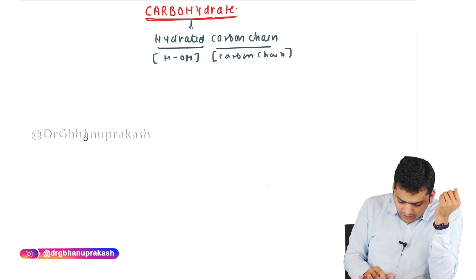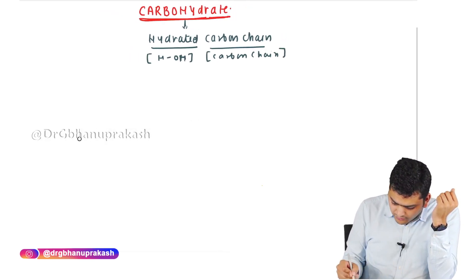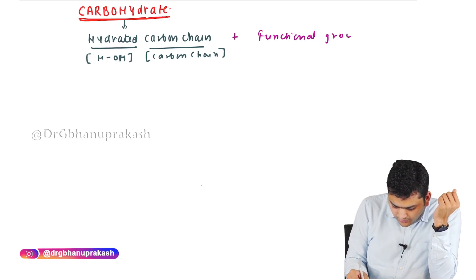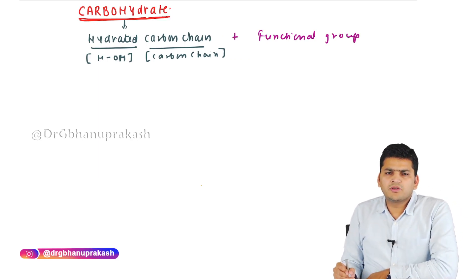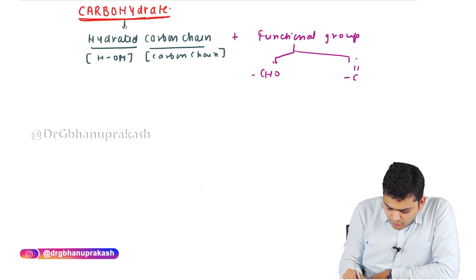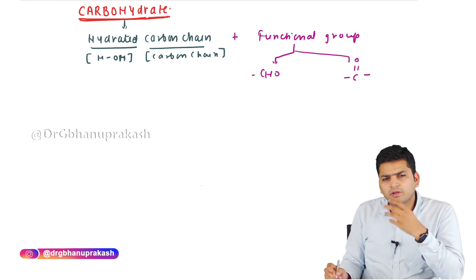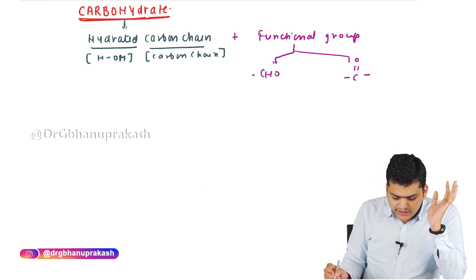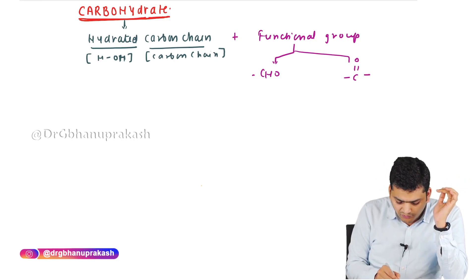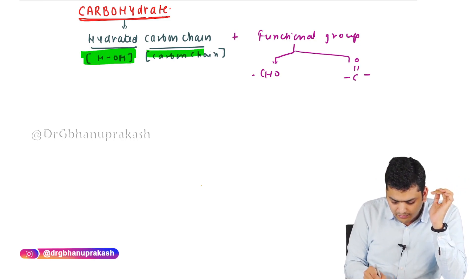To make a carbohydrate we need to add one functional group. There are two options: either we can use an aldehyde group (CHO) or a keto group (C=O). So there are three constituents: the hydration part, the carbon chain, and either the aldehyde or the keto group.